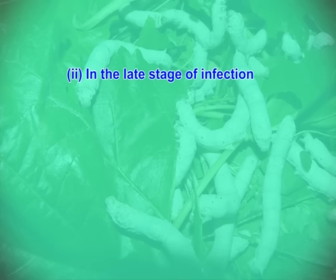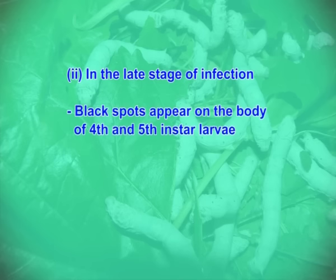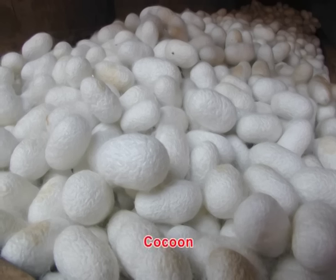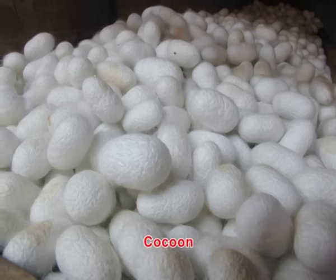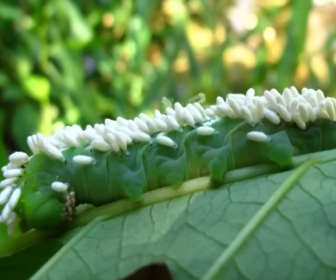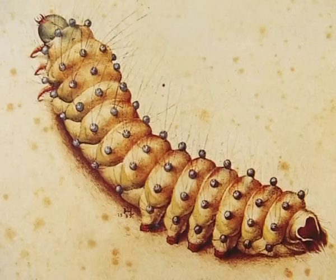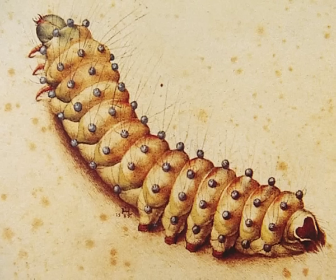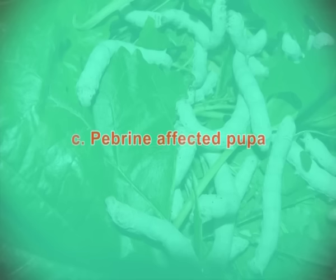In the late stage of infection, black spots appear on the body of 4th and 5th instar larvae. Spinning larvae spit and waste silk without properly spinning a cocoon. In India, the appearance of the typical black pepper-like spots is rare in infected larvae. Instead, irregular brown patches appear, indicating the presence of dead hypodermal cells due to pebrine infection. Though infected cocoons appear normal, the pupae inside show symptoms of pebrine infection.